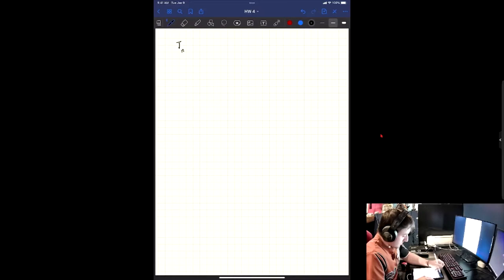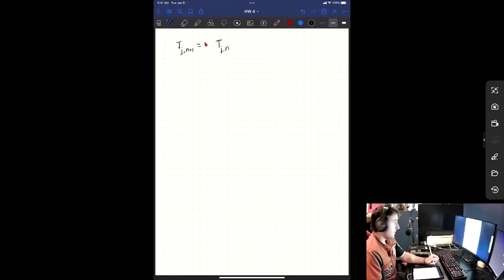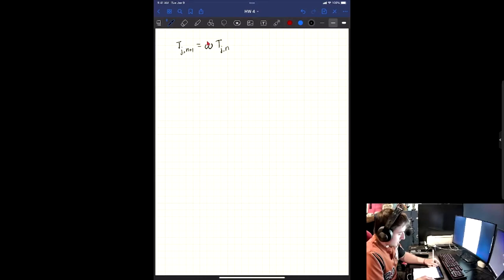So we have our temperature at some position J, and then we have N plus 1, and then we want this to be equal to our N. And then we have some factor here that will be in front of our T of JN. And this factor here is denoted as omega, and we want this to be less than or equal to 1.